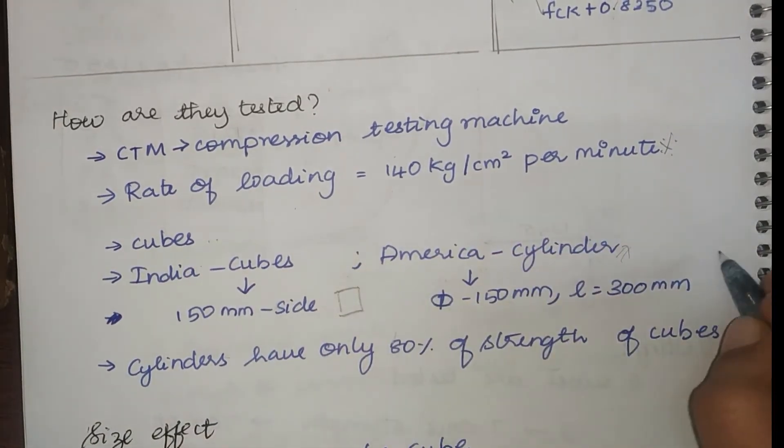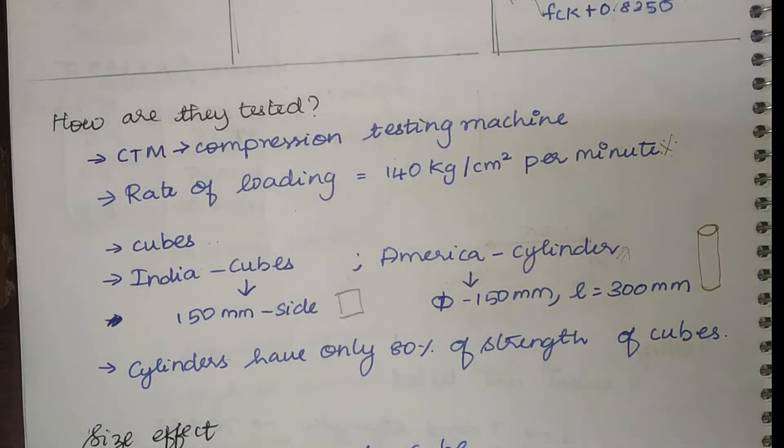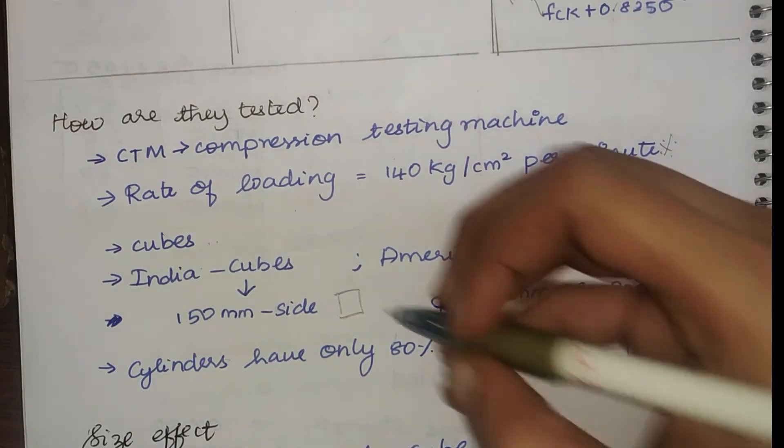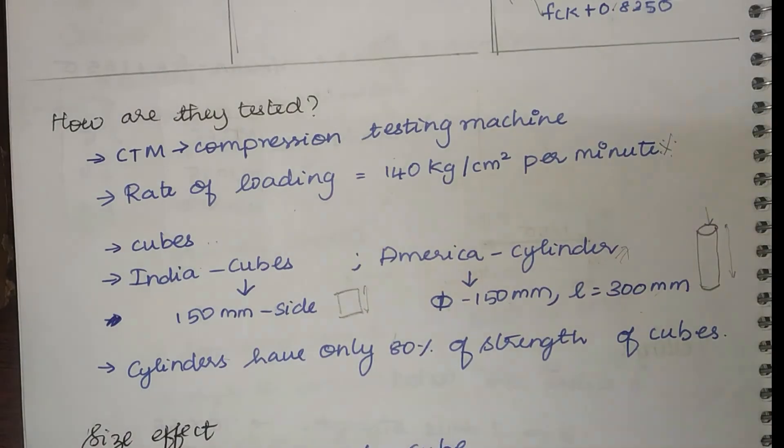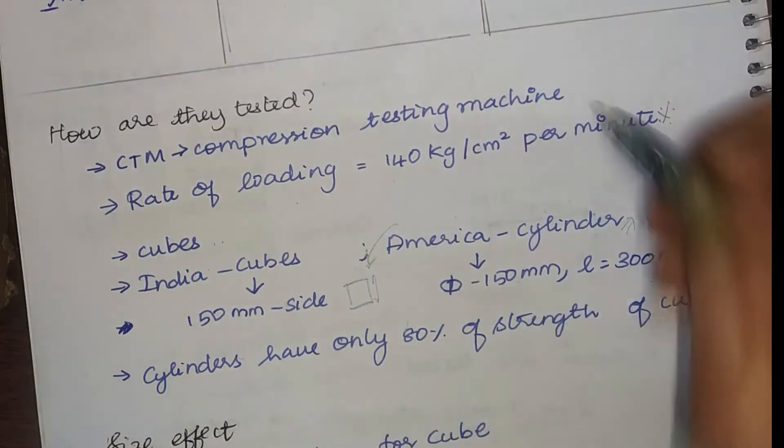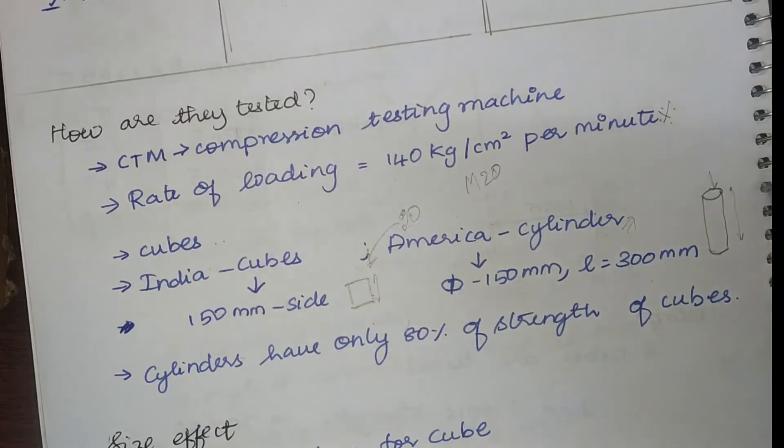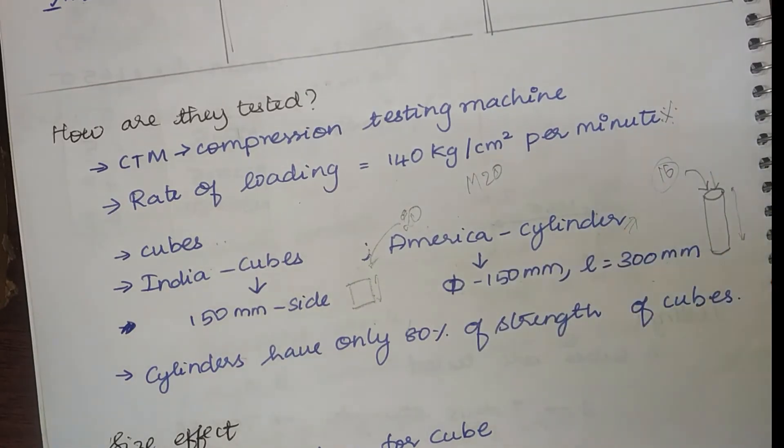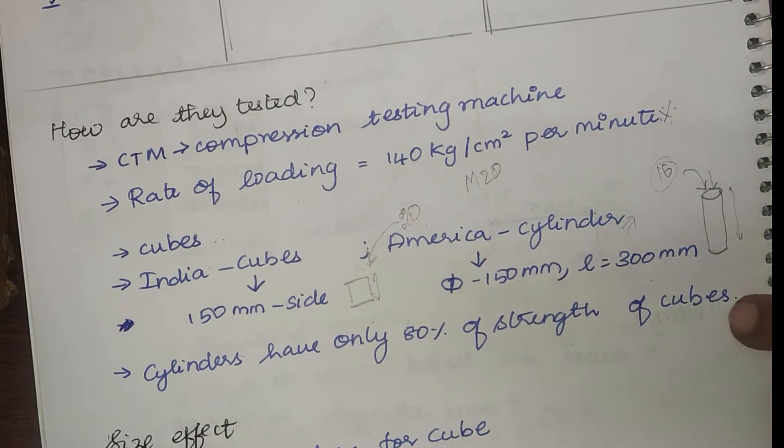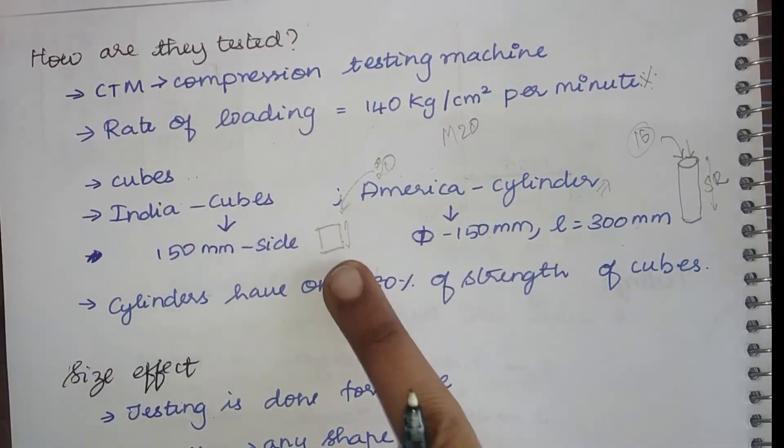My cube is going to be like this, my cylinder is going to be like this. We can see that the cylinder is more slender than my cube. Because of this, because of the slenderness ratio, my cylinder will fail first before my cube. For example, if I am going to create a mix design for M20, then if I am going to test it in my cube I will get 20, whereas in cylinder for the same mix design the cylinder will fail at a strength of 16 MPa itself, which is 80 percentage of 20. So this means that the cylinders have only 80 percentage of strength of the cube because of the factor of slenderness ratio.